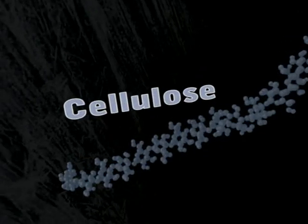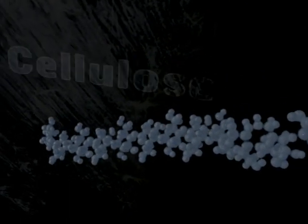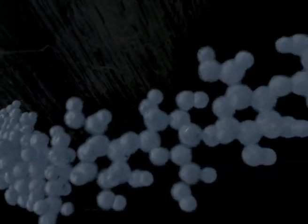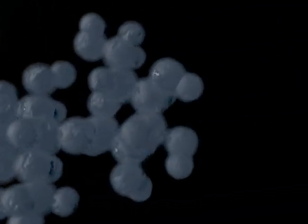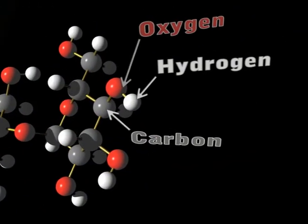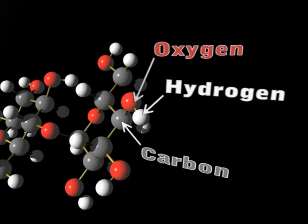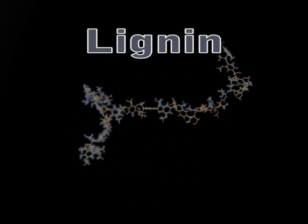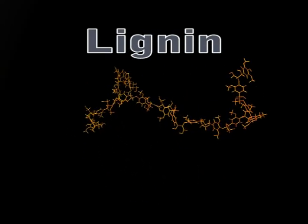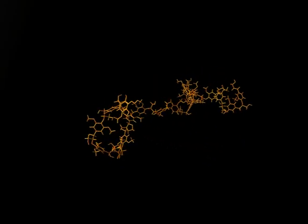Wood is mainly made from cellulose, which is a type of carbohydrate. Cellulose is made up of long chains of carbon, hydrogen and oxygen atoms and helps to give the wood its strength. The wood also contains lignin, a type of natural plastic, which protects the wood and also binds together the cellulose chains to give the cell walls rigidity.